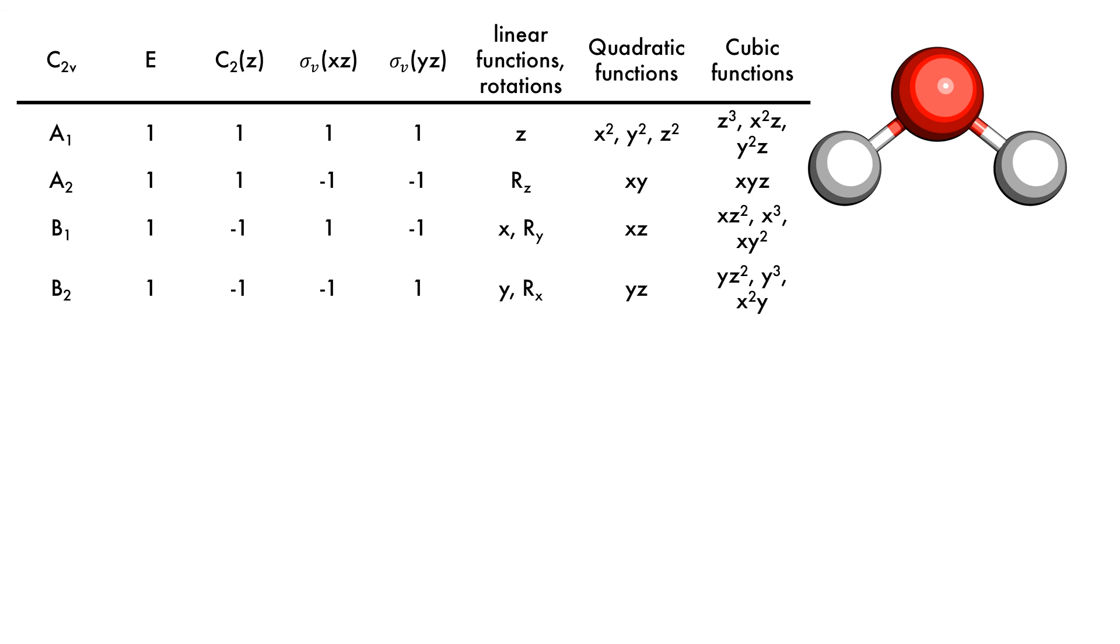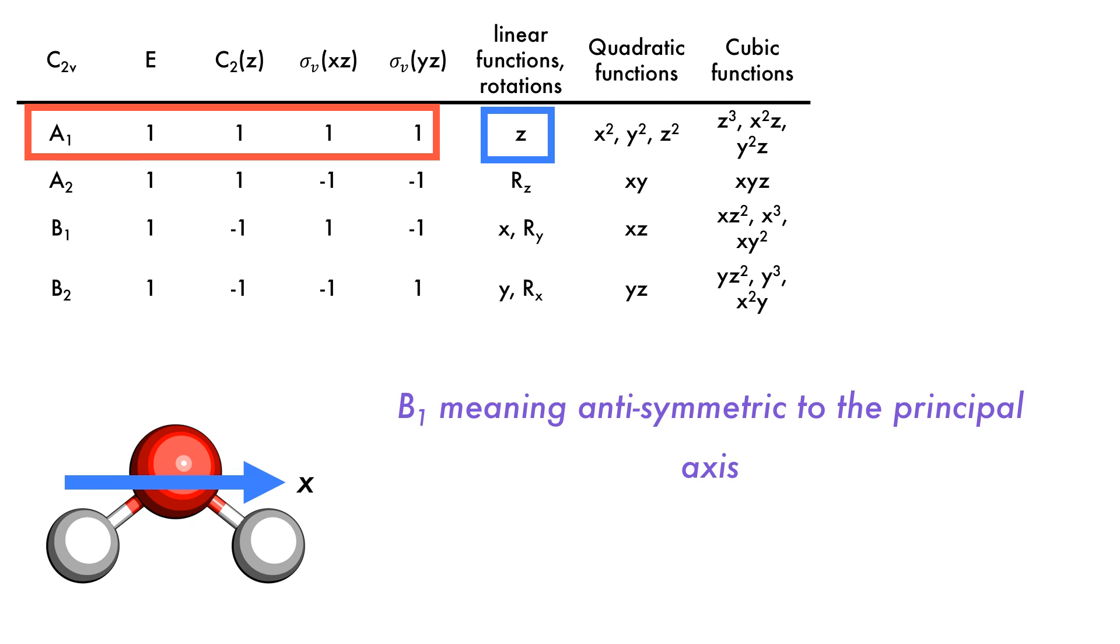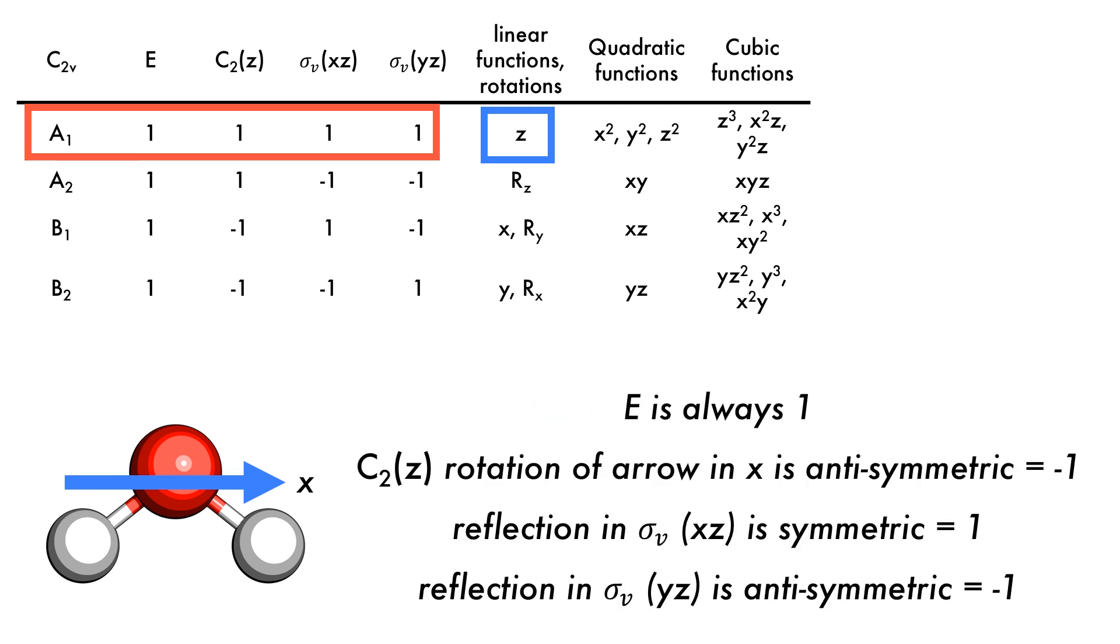Looking at the B1 irreducible representation, X is its basis. The various symmetry operations are then performed on the X axis of the water molecule. E is of course still one. Rotation of the arrow in the Z axis causes the object to be reversed, which gives it a minus one value. Reflection in the XZ axis leaves it unchanged, but reflection in the YZ axis causes it to be flipped, giving a plus one and minus one value respectively.